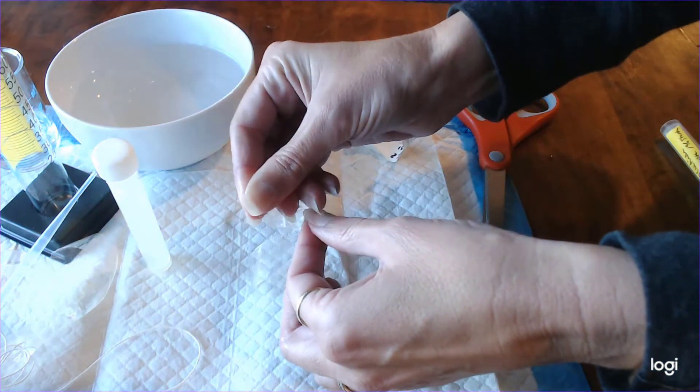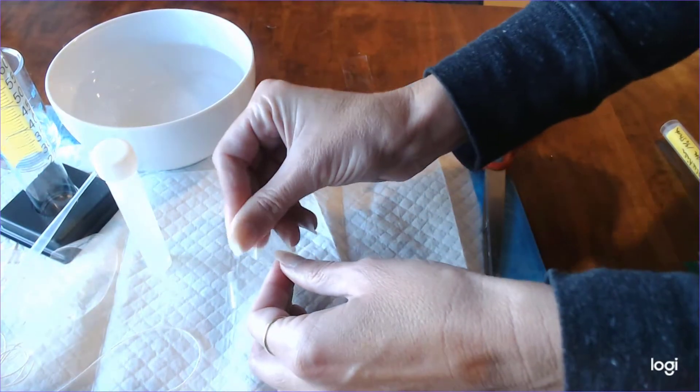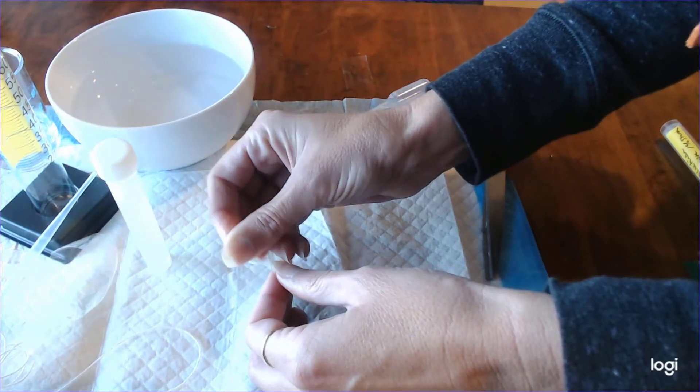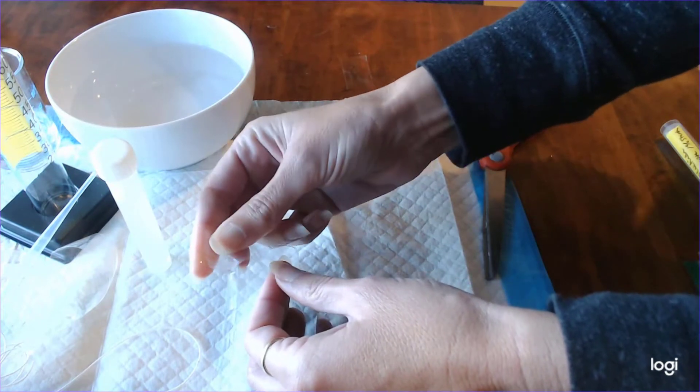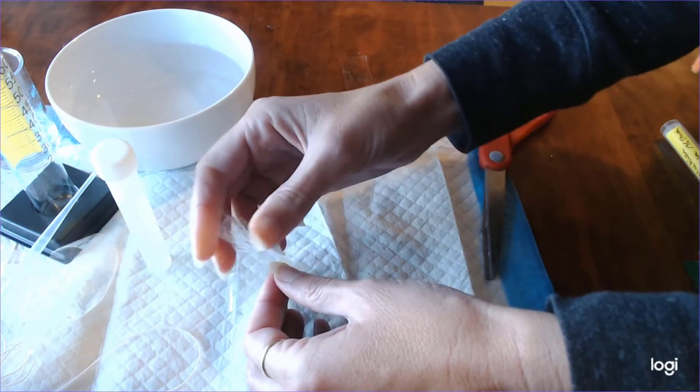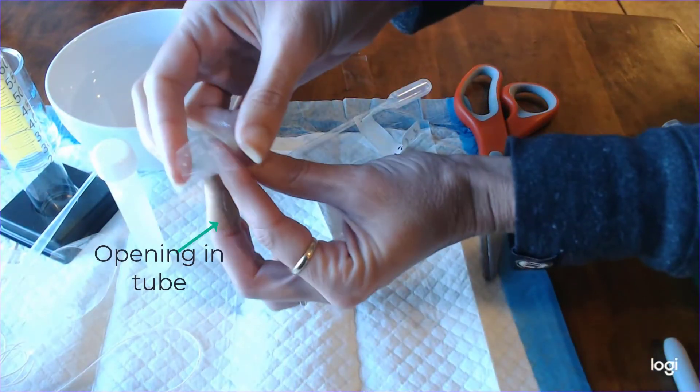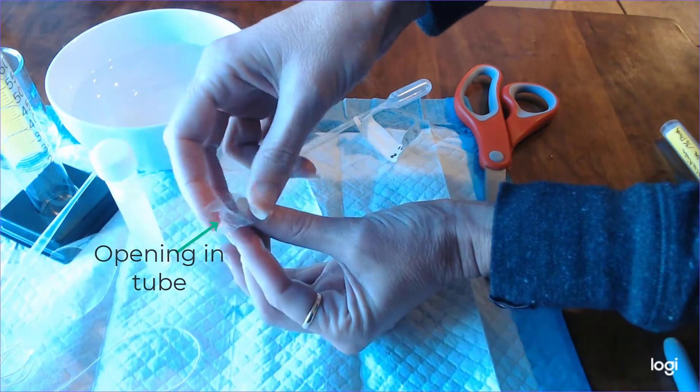And then what we're going to do is take our fingers and basically roll the tubing, one end of the tubing in between our fingers, over and over and over again until eventually the tube separates. So it takes me a little bit of time, some people are faster, but once it separates you can kind of see right there the opening of the tube.